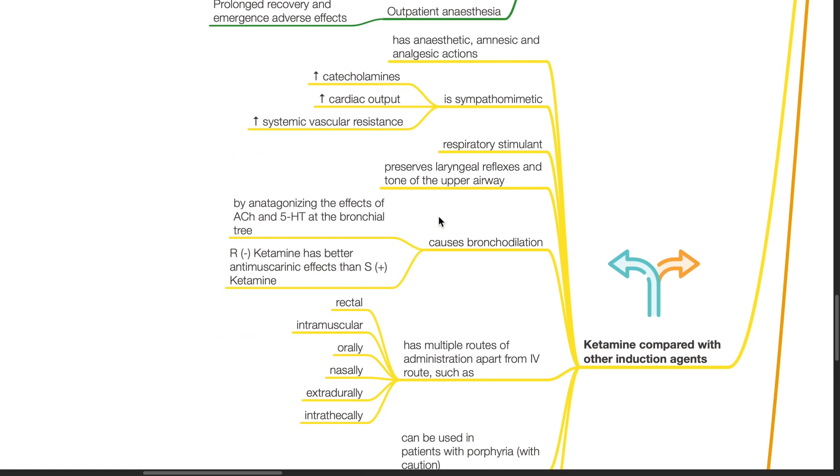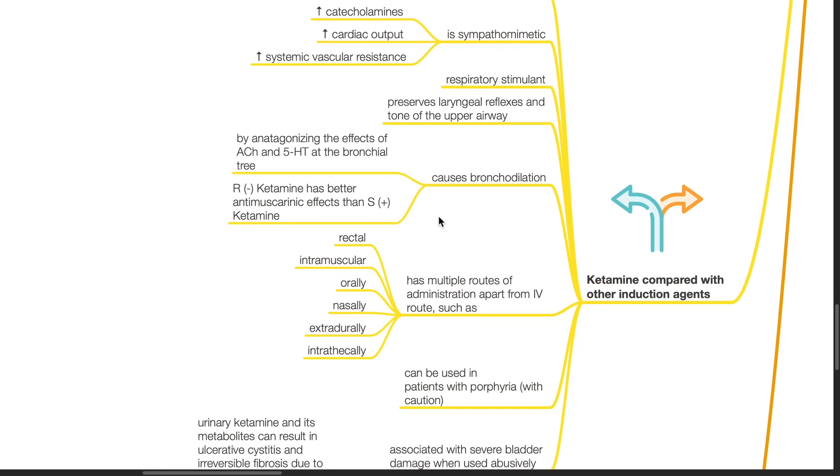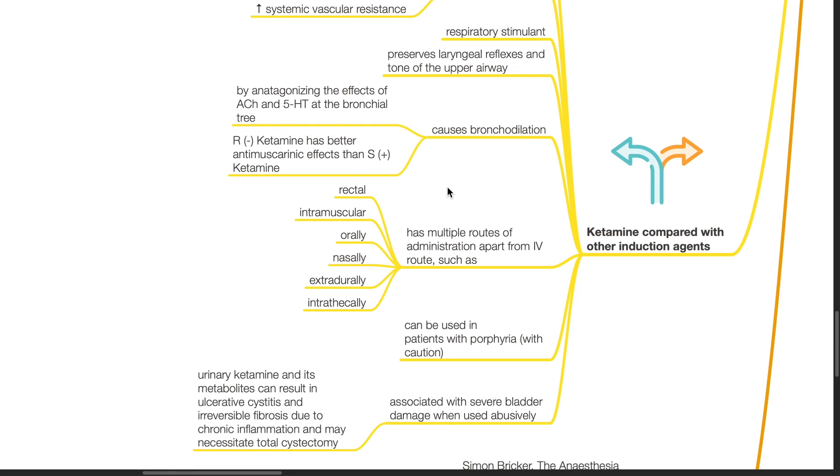Ketamine causes bronchodilation by antagonizing the effects of acetylcholine and serotonin at the bronchial tree. R-levo-ketamine has better anti-muscarinic effects than S-dextroketamine. Ketamine has multiple routes of administration apart from the IV route such as rectal, intramuscular, oral, nasal, extradural, and intrathecal.